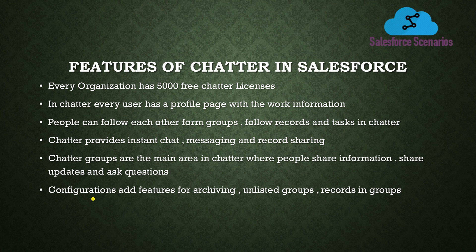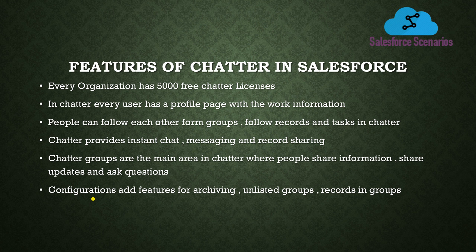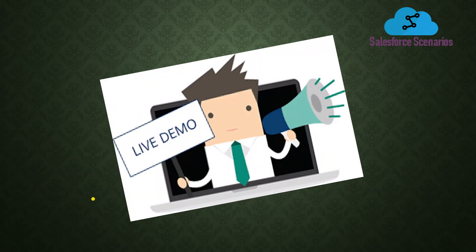Chatter groups are the main area in Chatter where people share information, share updates, ask questions, add files, attachments, and images. We can also add emojis. There are also polls — for example, if you have a group of people working in one team, you can run a poll for something like where to order lunch or breakfast. Configuration also adds features for archiving unlisted groups and managing records in groups.